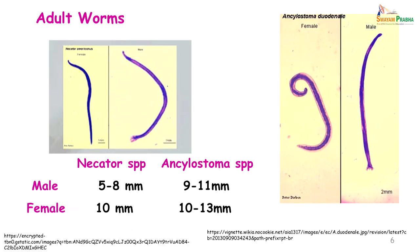Coming to the morphology of the adult worms, the adult worms in Necator species are tinier than Ankylostoma species. As with all nematodes, the males are smaller than the females. In Necator the male is about 5 to 8 millimeters, whereas in Ankylostoma he is 9 to 11 millimeters. The female is more or less the same size in both worms. Ankylostoma duodenale female also shows a coil at one end — hence the name hookworm.